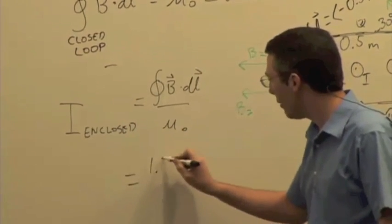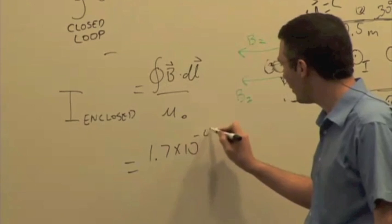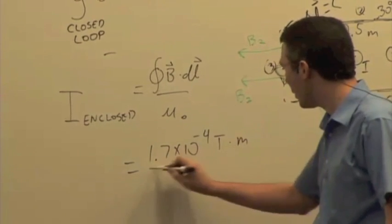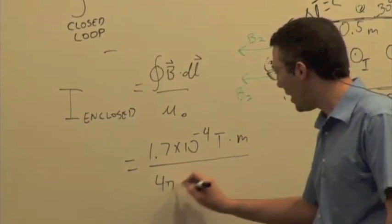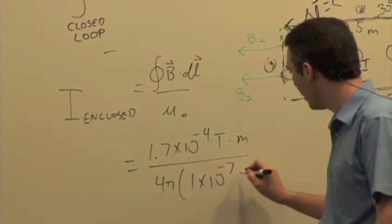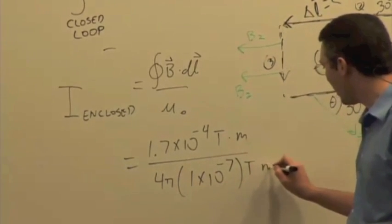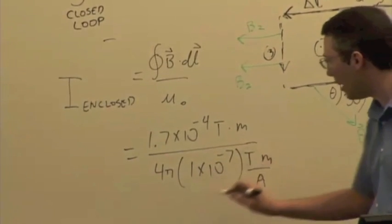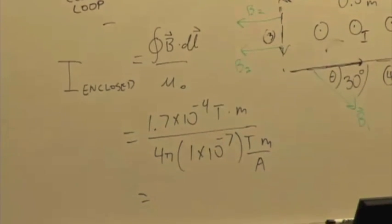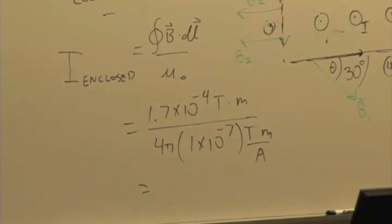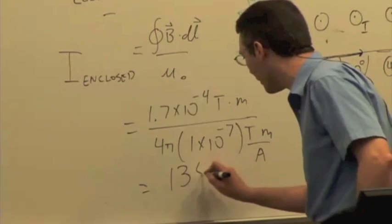So we get B dot DL divided by mu naught, so that's going to be 1.7 times 10 to the minus 4 Tesla meters over 4 pi times 10 to the minus 7 Tesla meter per ampere. So we're going to get units of amps, and what's that work out to? 135, kind of a large current, but this is just an example.